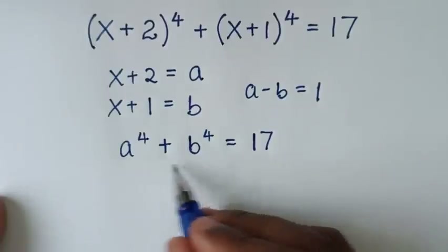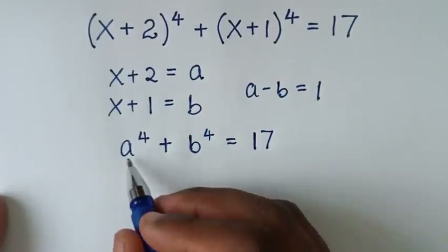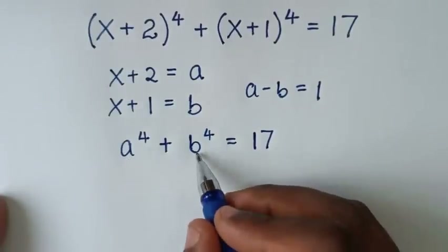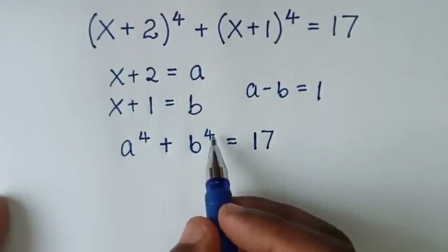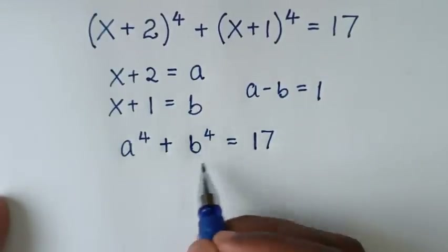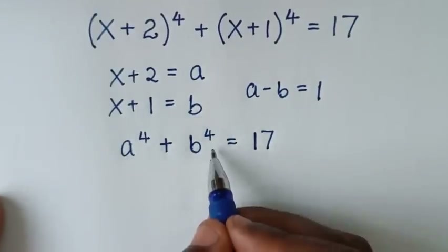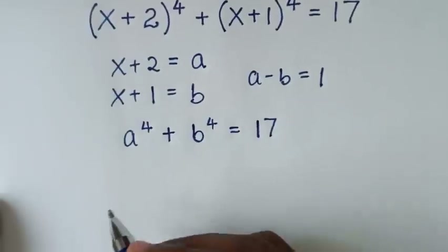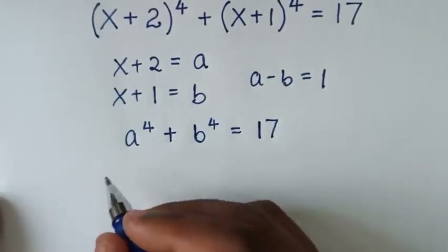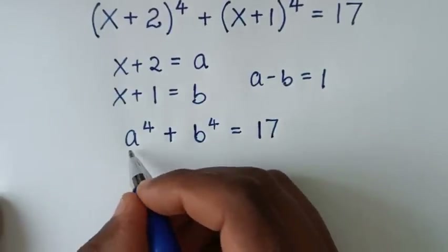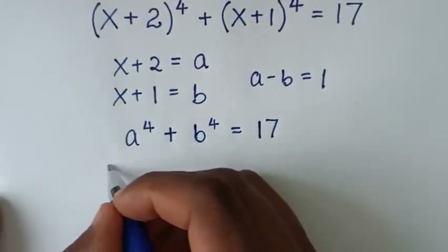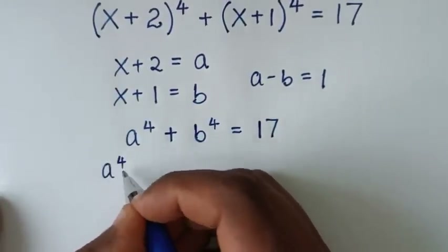Then from our equation a⁴ + b⁴, we make this in the form of a perfect square. To make this in the form of a perfect square, it will be a⁴...